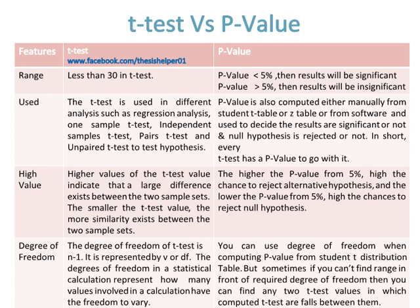The degree of freedom of the t-test is n minus one, represented by v or df. Degrees of freedom in a statistical calculation represent how many values involved in a calculation have the freedom to vary. You can use degrees of freedom when computing the p-value from the Student t-distribution table. If you can't find the exact range for the required degree of freedom, you can find any two t-test values between which the computed t-test value falls.